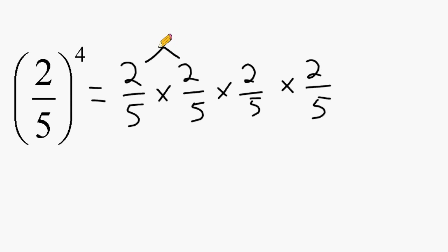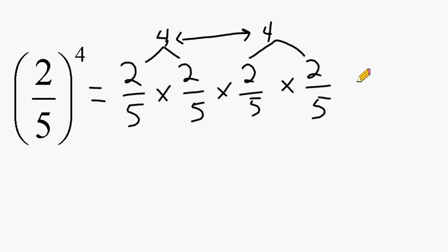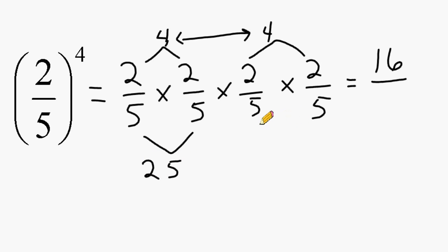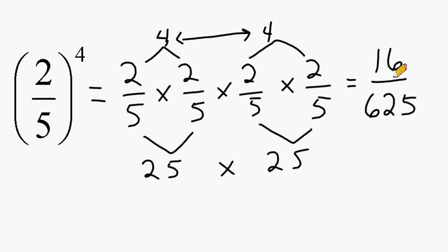We start with 2 times 2, which is a product of 4, and 2 times 2 again is also 4. Then we multiply these two fours together, giving us a product of 16. For the denominators, 5 times 5 gives us 25, as does the other 5 times 5. Now we multiply 25 by 25, which gives us a product of 625. So 2 fifths raised to the fourth power is equivalent to 16 over 625.